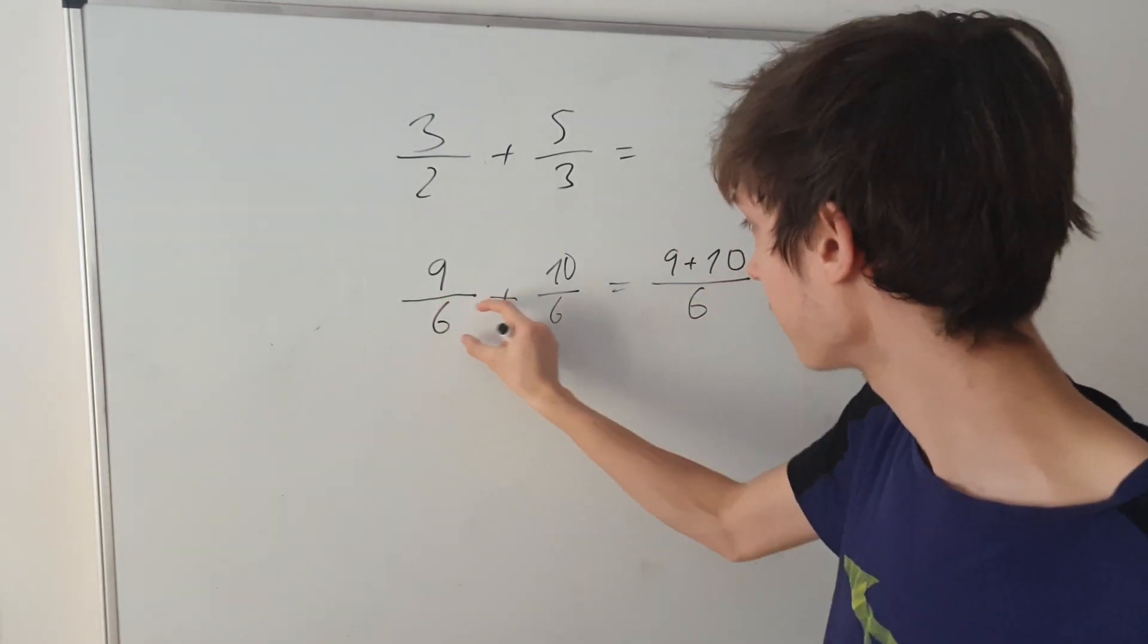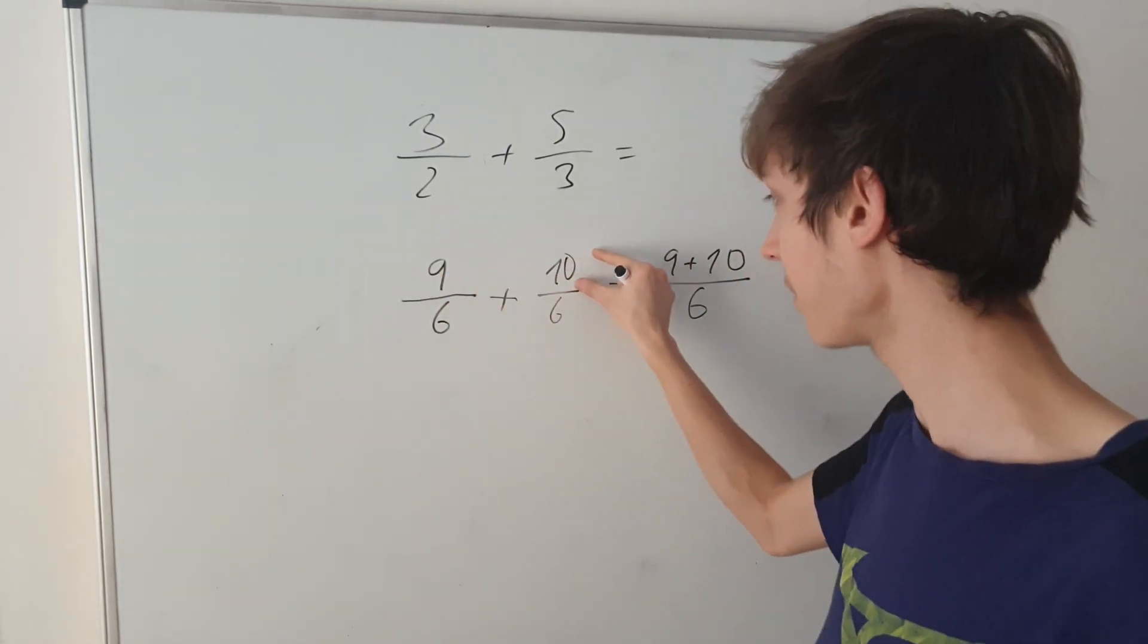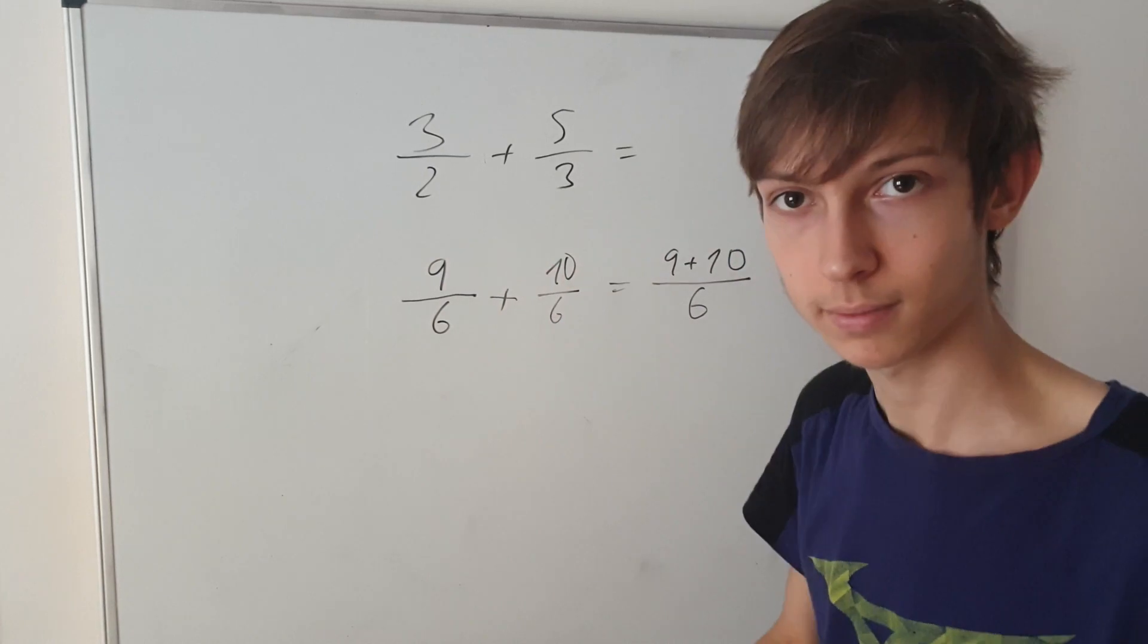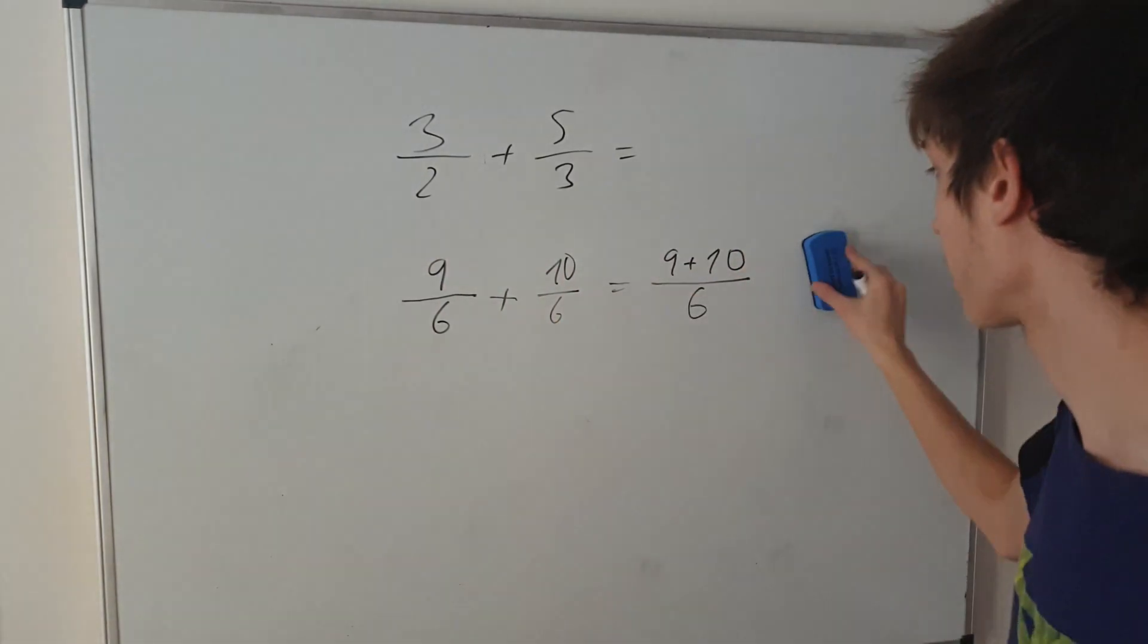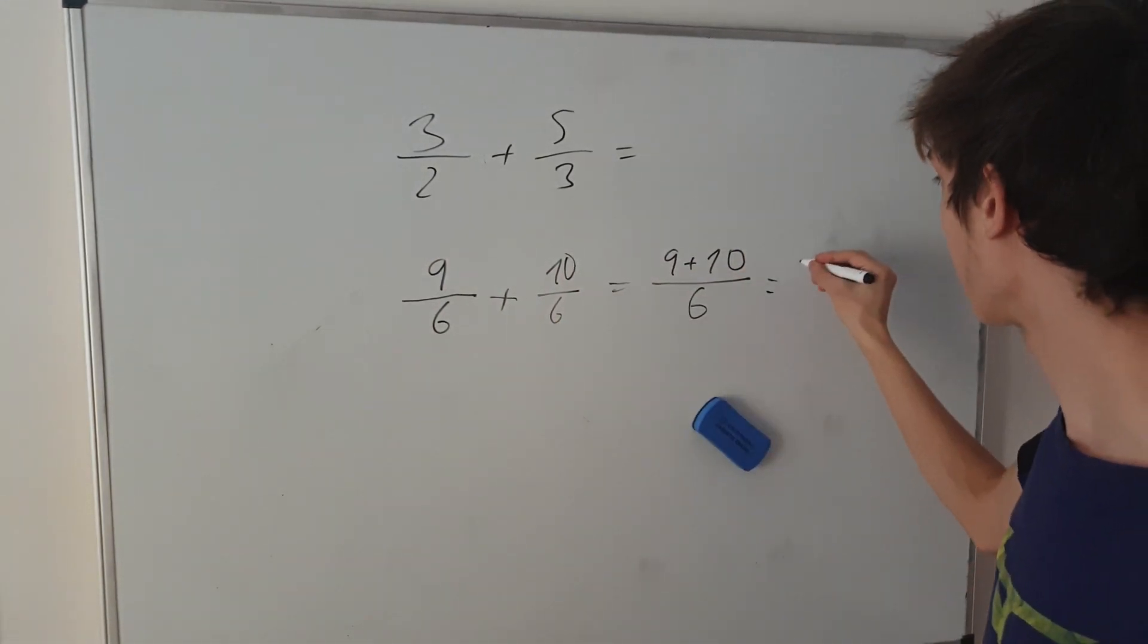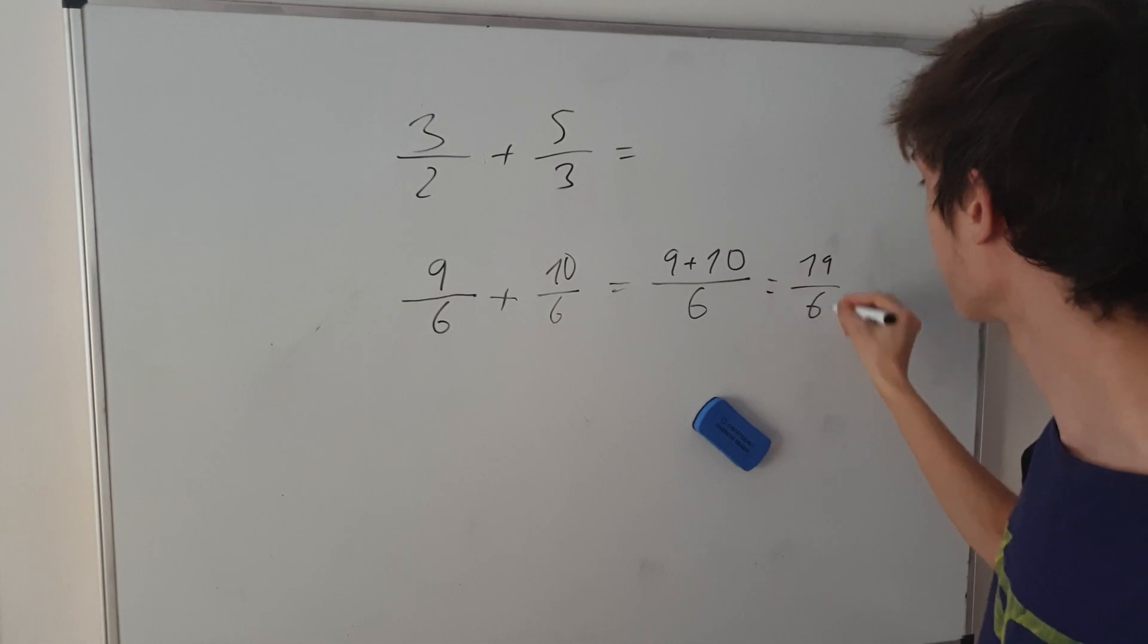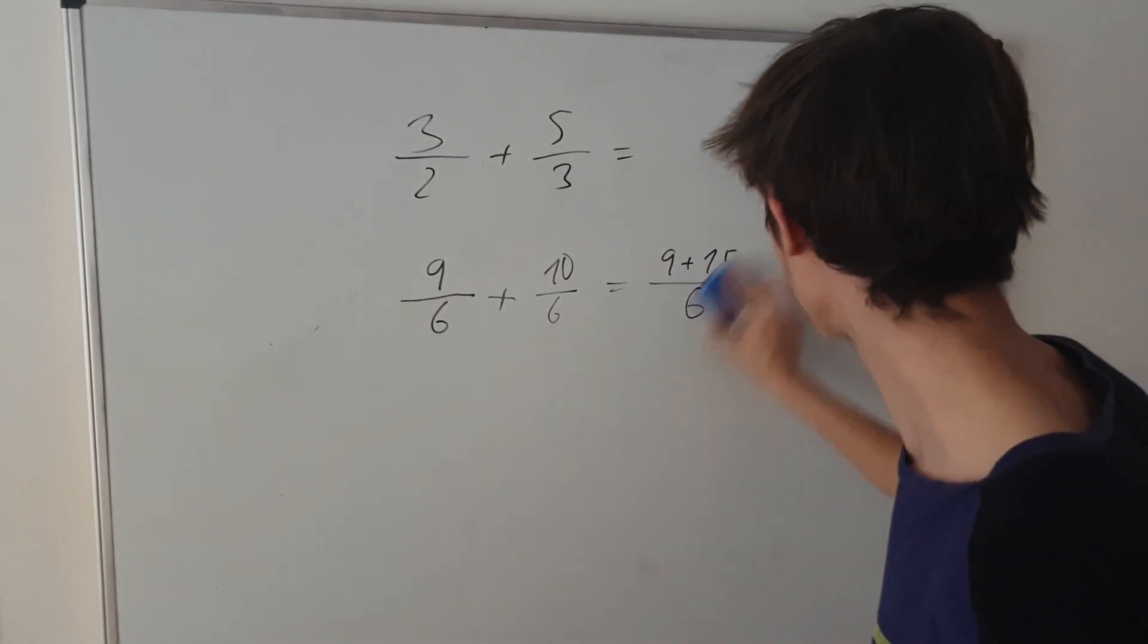And the denominator will be here, the 6. Okay? So, we have to just make sure that the bottom number is the same and then you can add up the arguments of the upper side. And then you can make it a single fraction. Okay? So, we got 19 over 6. Okay? So, that was our first example. Let's go to the next one.